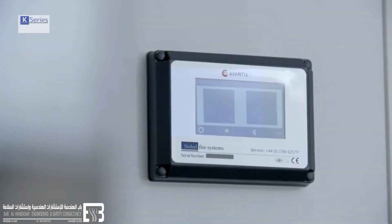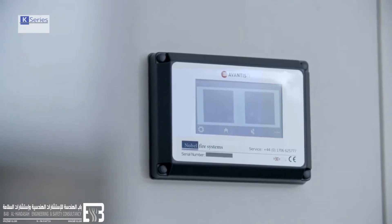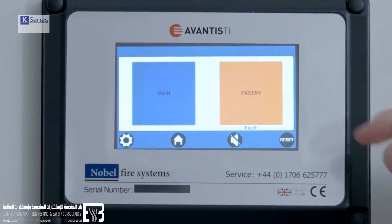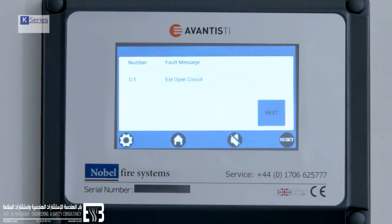In the unlikely event that a fault develops within the system, the Avantis panel gives a visual and audible warning, plus a text read-out describing the issue.